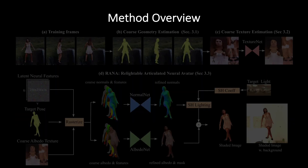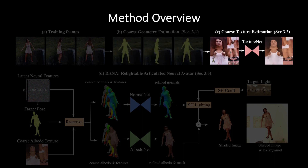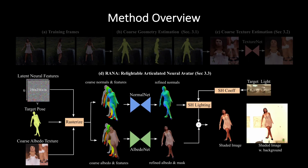Here is an overview of our proposed method to address this challenging problem. We split the problem into three sub-problems including coarse geometry estimation, coarse albedo texture map estimation, and learning of the relightable and articulated neural avatar.